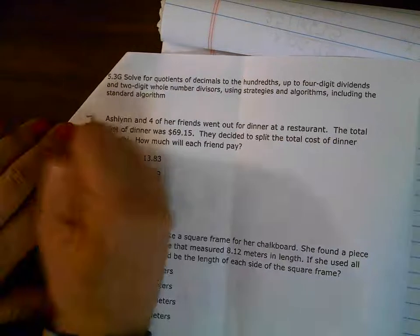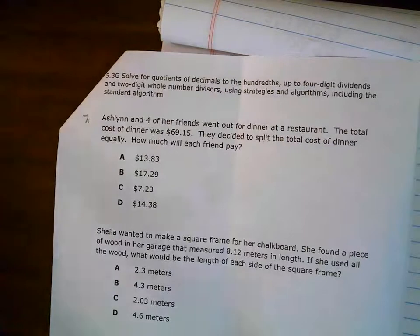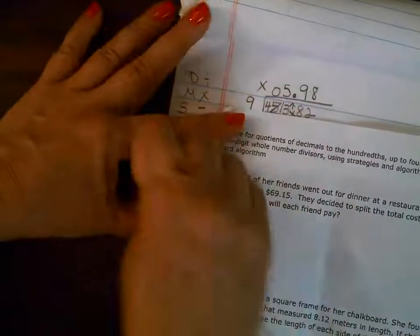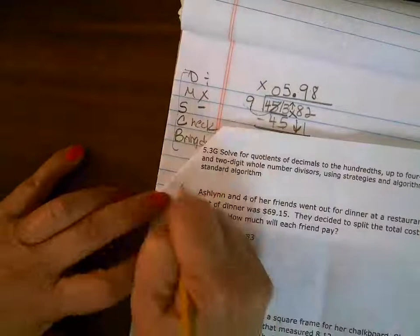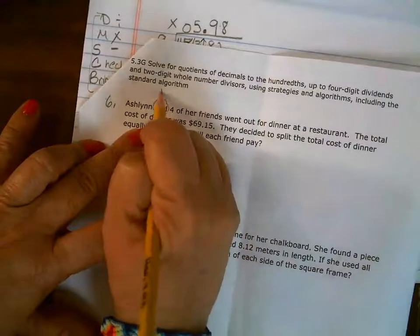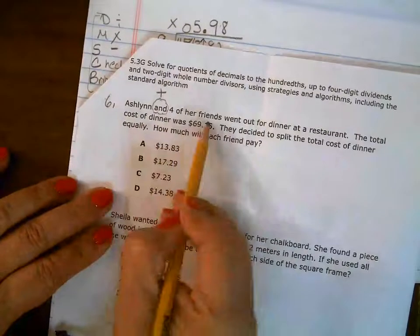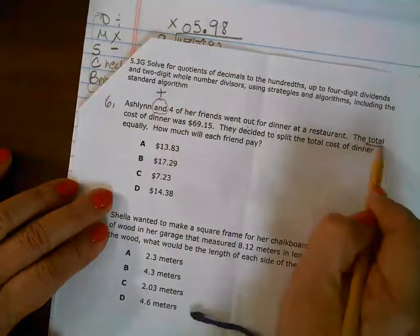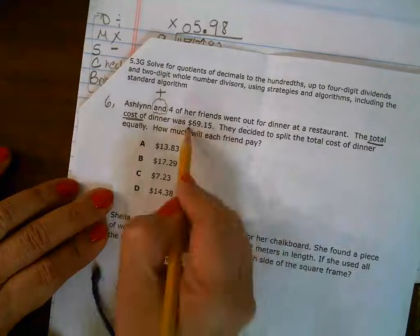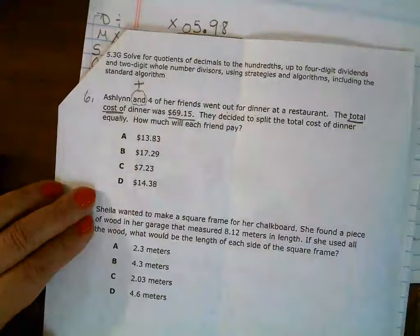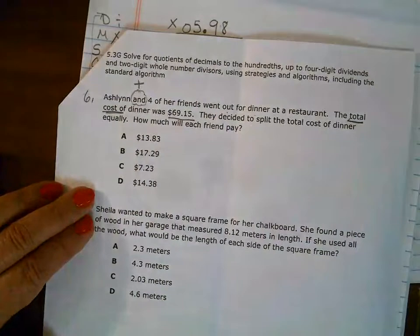All right, question number seven - make sure, nope, we're on question six. I lied, not on purpose, but it's six. All right, Ashlyn and... when you see that, what are you supposed to put right on top there? You go. Four of her friends went out for dinner at a restaurant. The total cost of dinner - love that word, they just put it in there for you - cost of dinner was $69.15. They decided to split the total cost of dinner equally. How much will each friend pay?